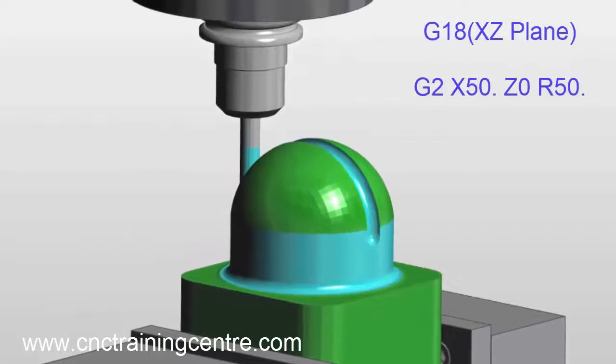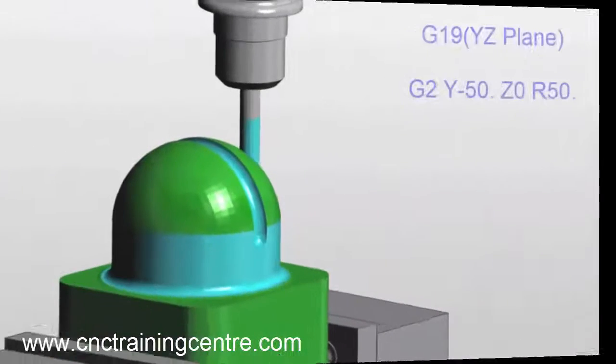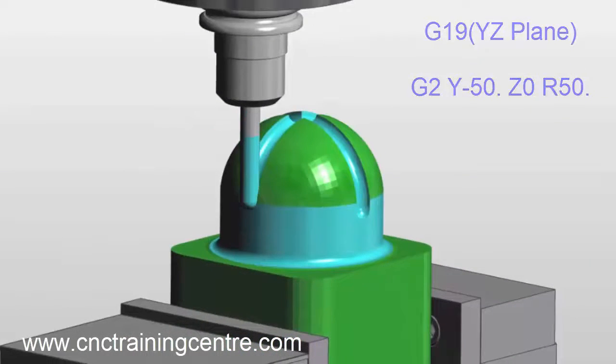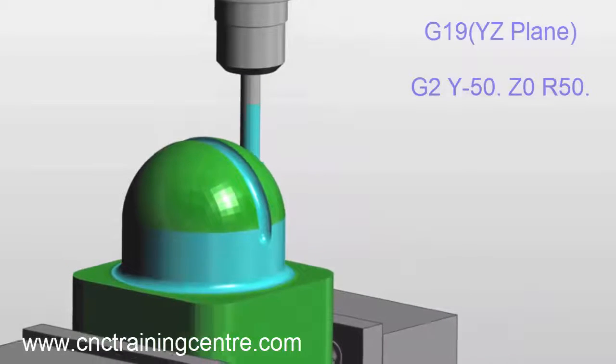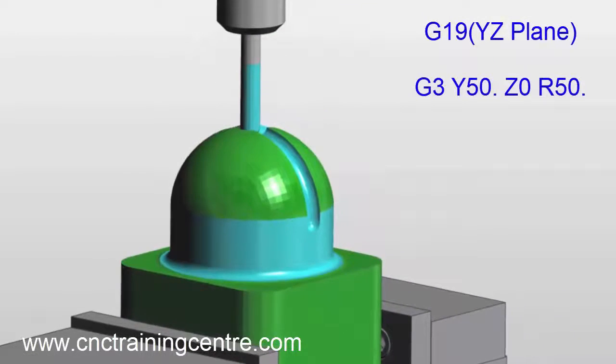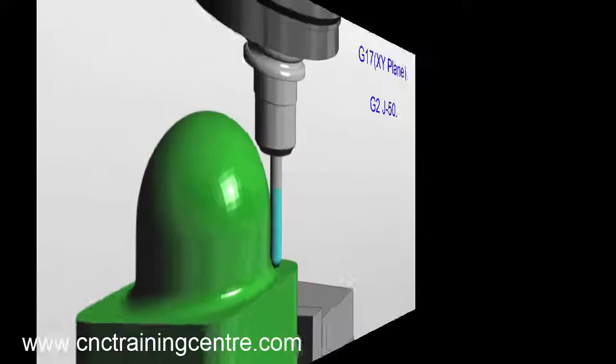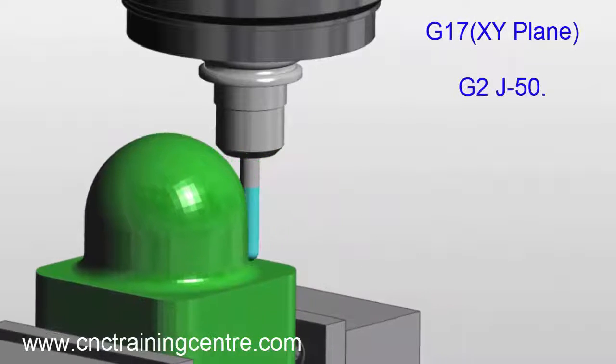Then this one, G19, is the Y and Z axis, which is sort of the table in front of you going across the table. So these are the three plane selections when we're on a machining center. If we were scanning this dome, we could be using any of these plane selections.